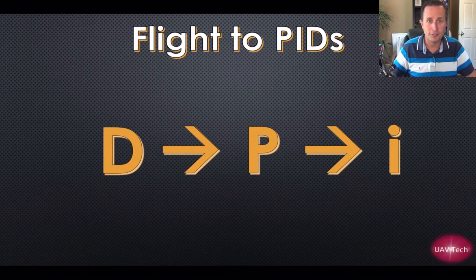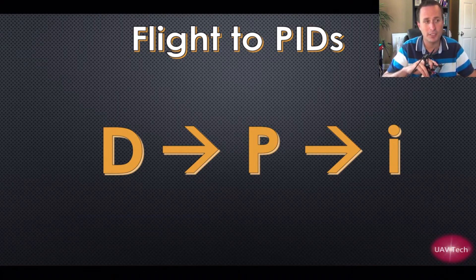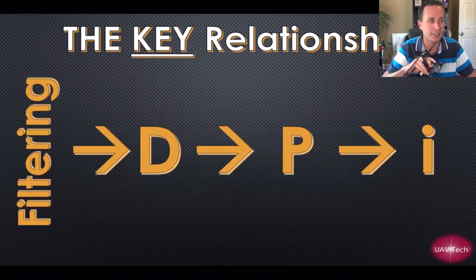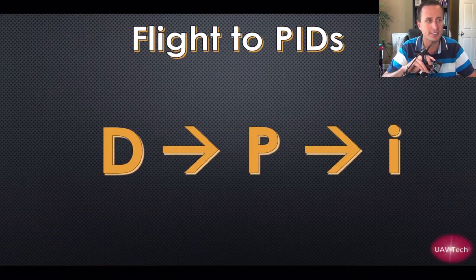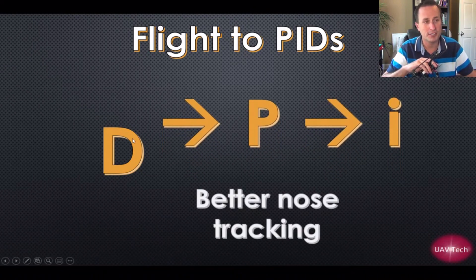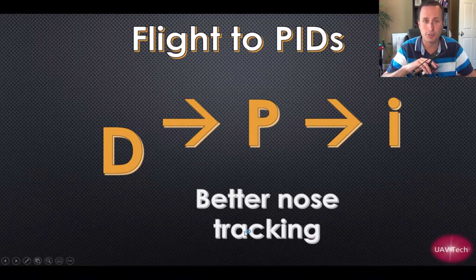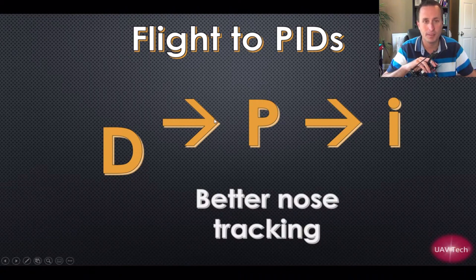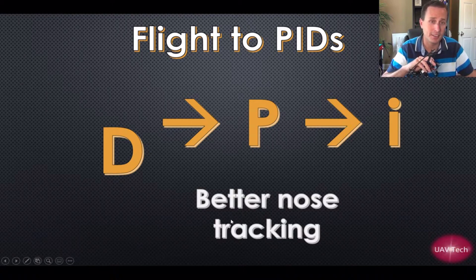So flight to PIDs - the key that messes people up for tuning is, that's great that you have these relationships but what does that mean? As far as adjustments, well when you want to adjust this relationship and get better nose tracking, you really want to adjust the relationship between your D and your P term. You would raise the I term to come along for the ride because we only want to adjust one thing.